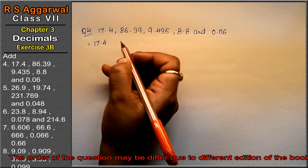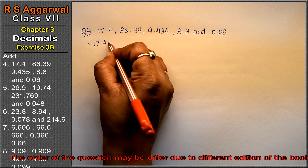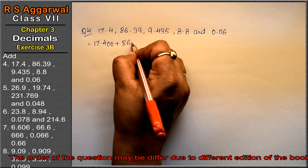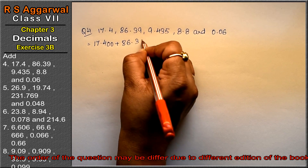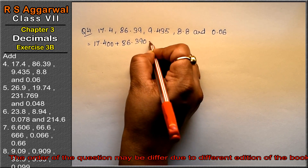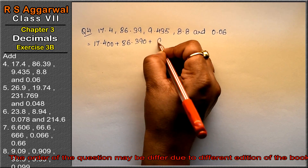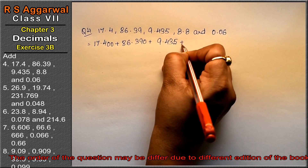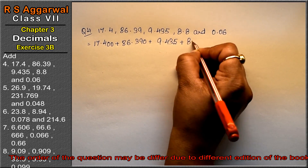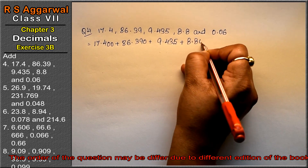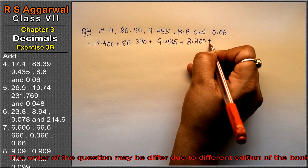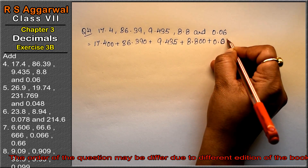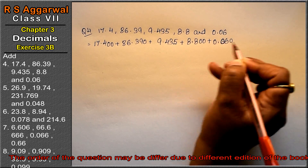Maximum 3 digits after the decimal. So: 17.400 plus 86.390 plus 9.435 plus 8.800 plus 0.060.